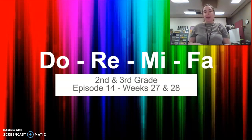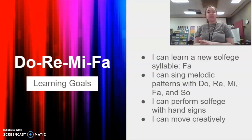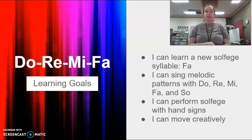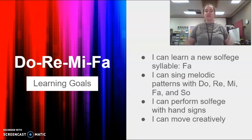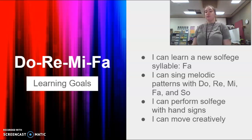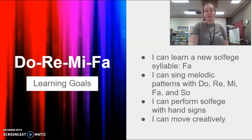Do, re, mi, and fa. At the end of this video, we are going to have our instructions for your assessment, so make sure you're listening and ready to do that assignment at the end of the video. Our learning goals for today are to learn a new solfege syllable, fa, and to sing melodic patterns using do, re, mi, fa, and so. We'll also be able to perform using our hand signs and do a little bit of moving.